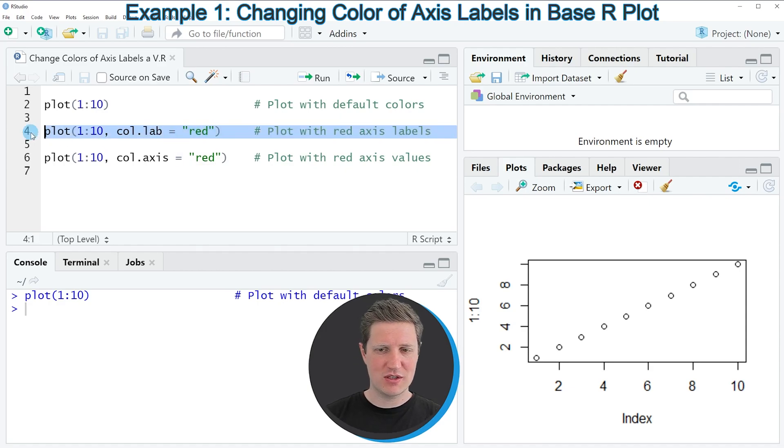If you run this line of code, you can see that a new plot is created at the bottom right and this time our scatter plot is shown with red labels on the axis.